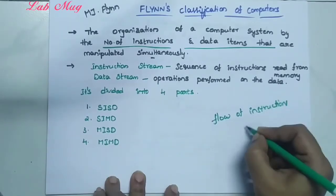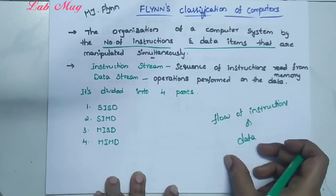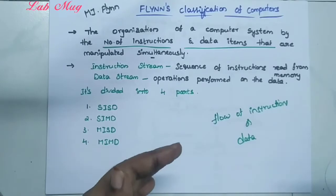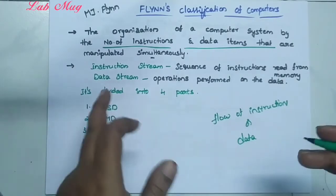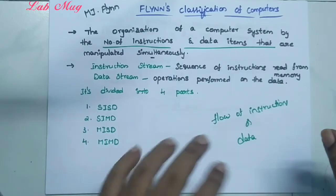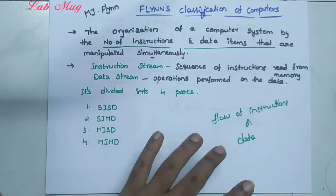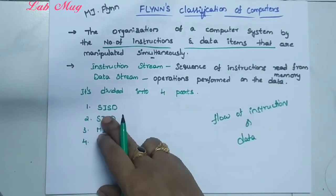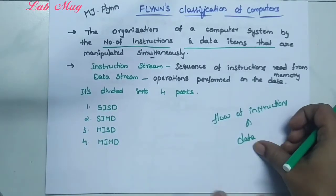We divided into two categories: first category is instructions, second category is data. So stream means flow. Flow of instructions means instruction stream, and flow of data means data stream.